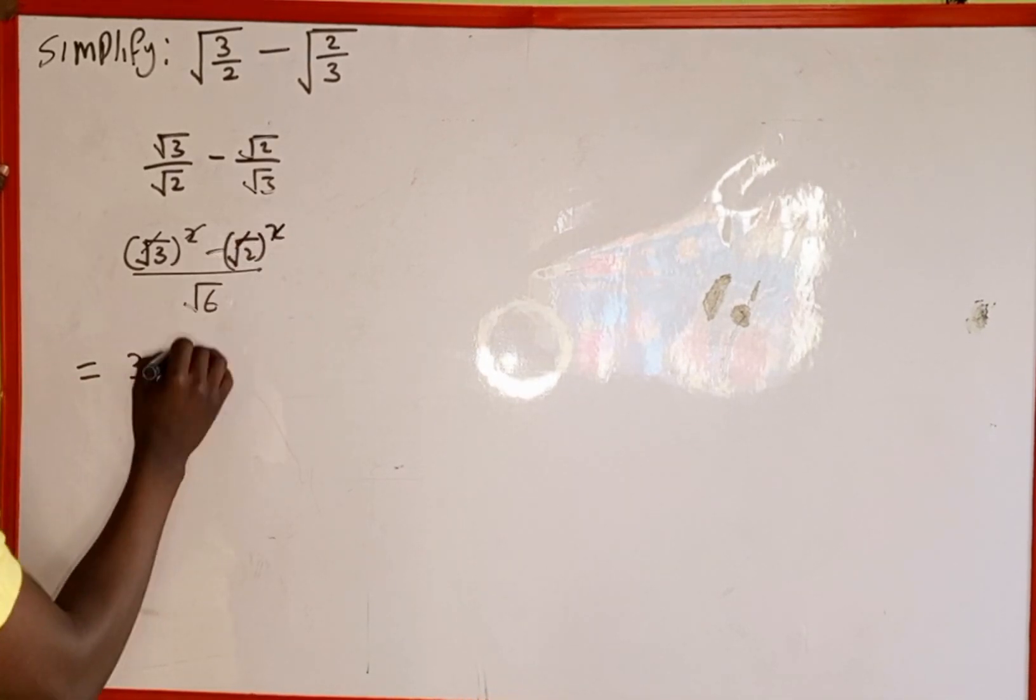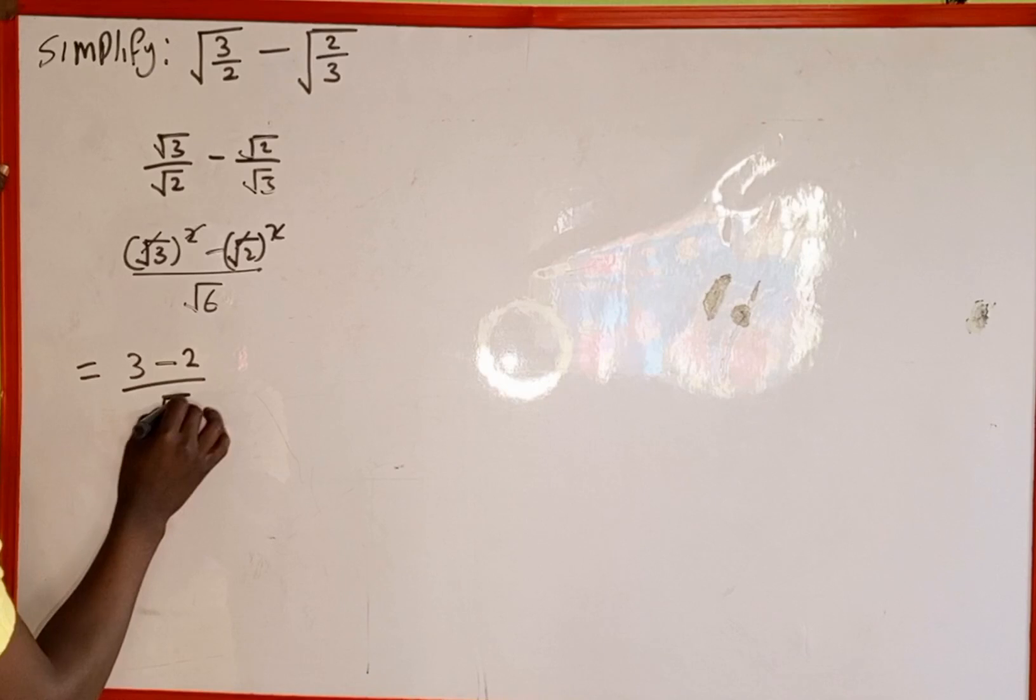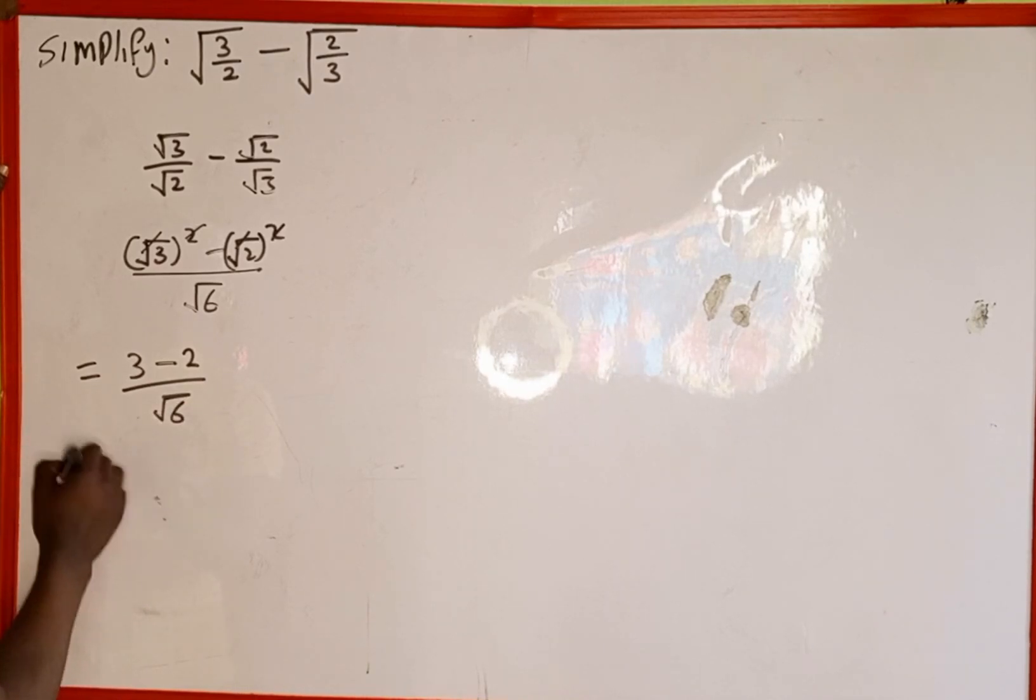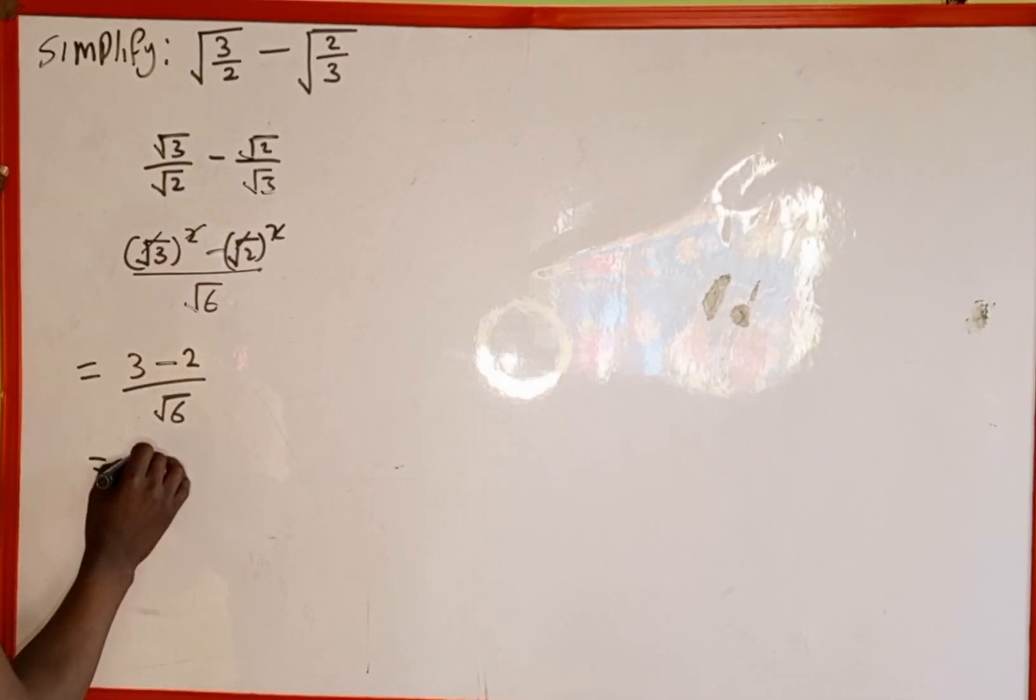Also the square will cancel the square root to be 2. Then everything all over √6. So this is going to be the same as 3 minus 2 is going to give us 1 all over √6.